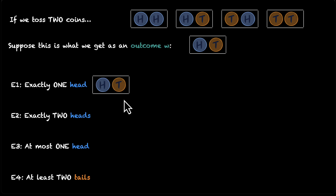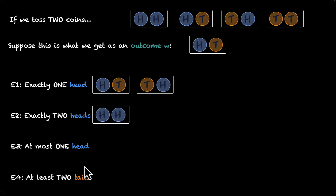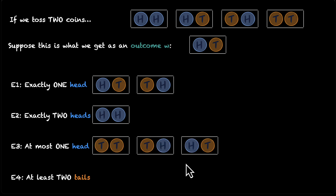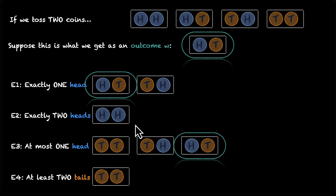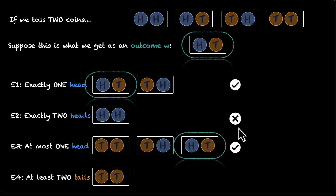How do you get exactly one head? Either the first one is heads or the second one is heads. How do you get exactly two heads? There's only one way. How do you get at most one head? At most means you can have a maximum of one head, so either you can have no heads or you can have one head. And how do you get at least two tails? Well, that's only one way — you have to have both of them as tails. Now it's a matter of observation: figure out where you see this outcome W. You see it here in the first event and you see it here in the third event. These are the two cases where you see this outcome W. Formally, W is a subset of event E1 and event E3. So the first event has occurred, the third event has occurred, the second has not, and the fourth has not occurred.